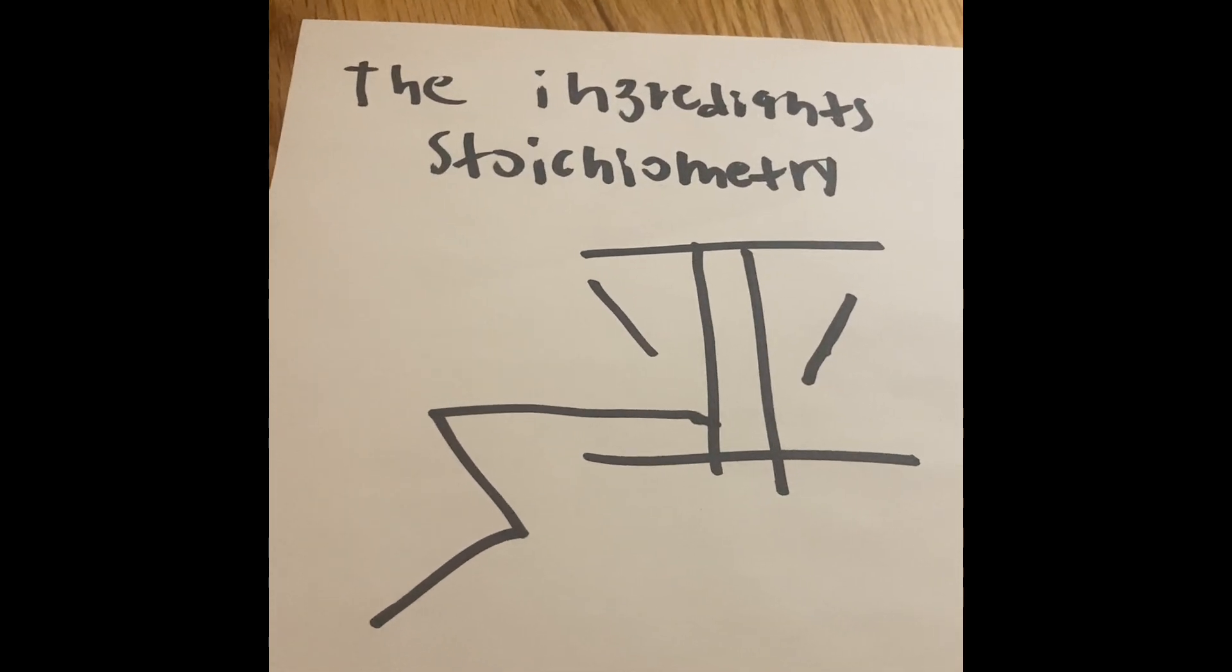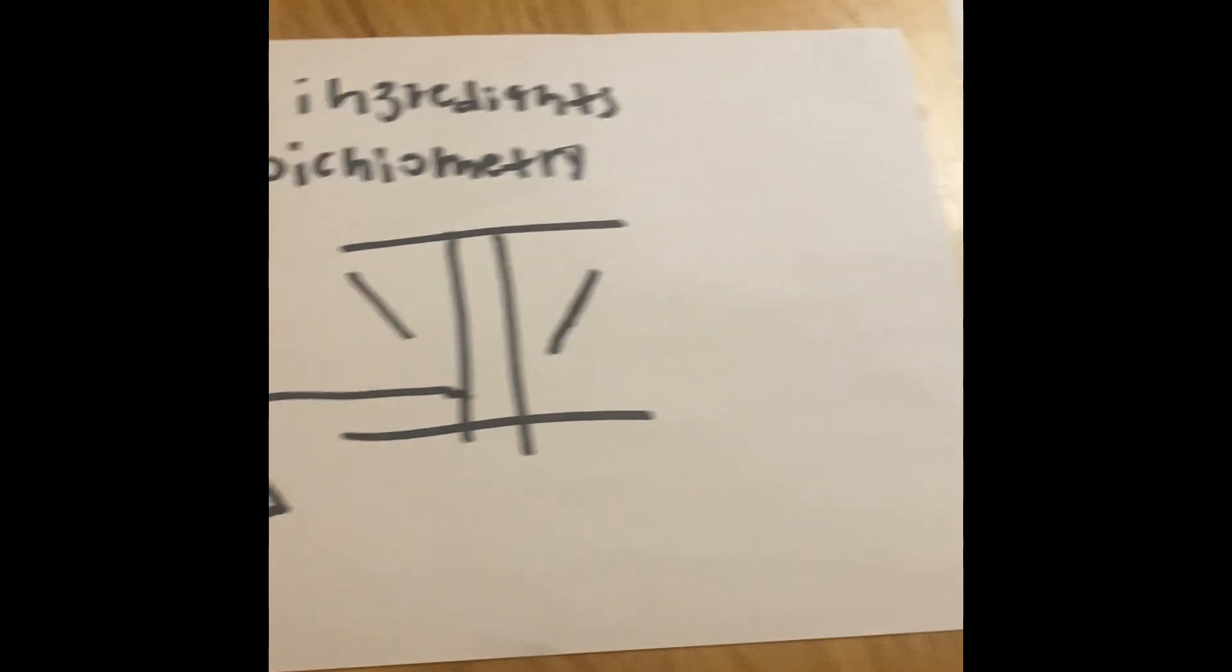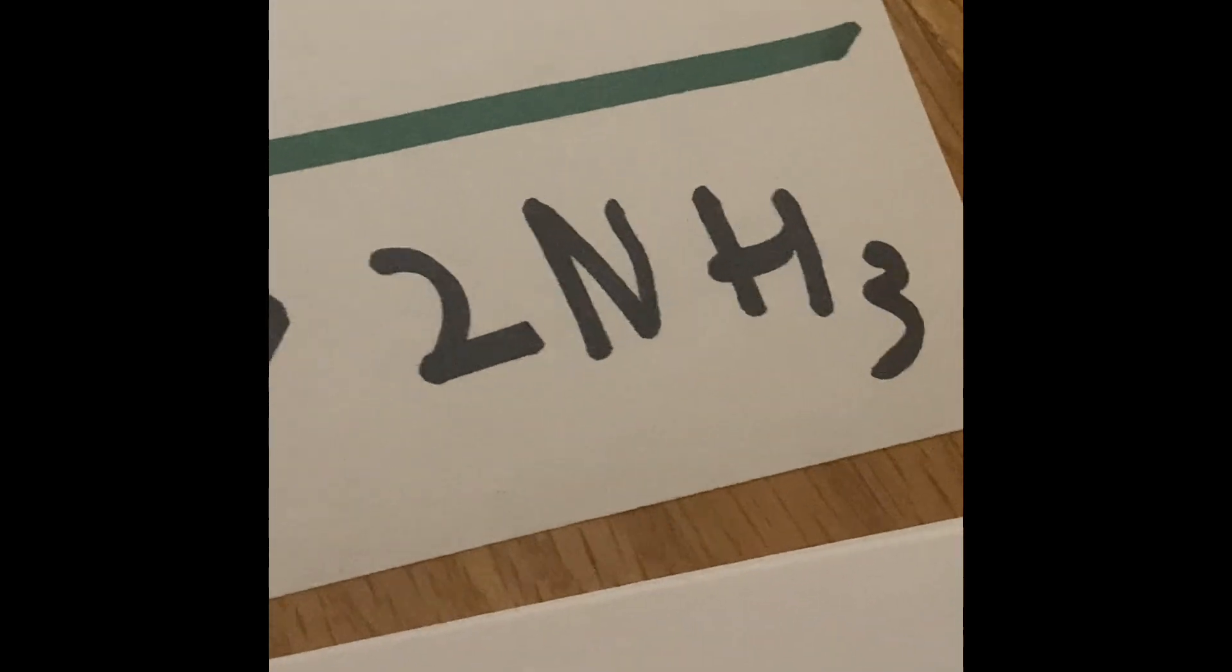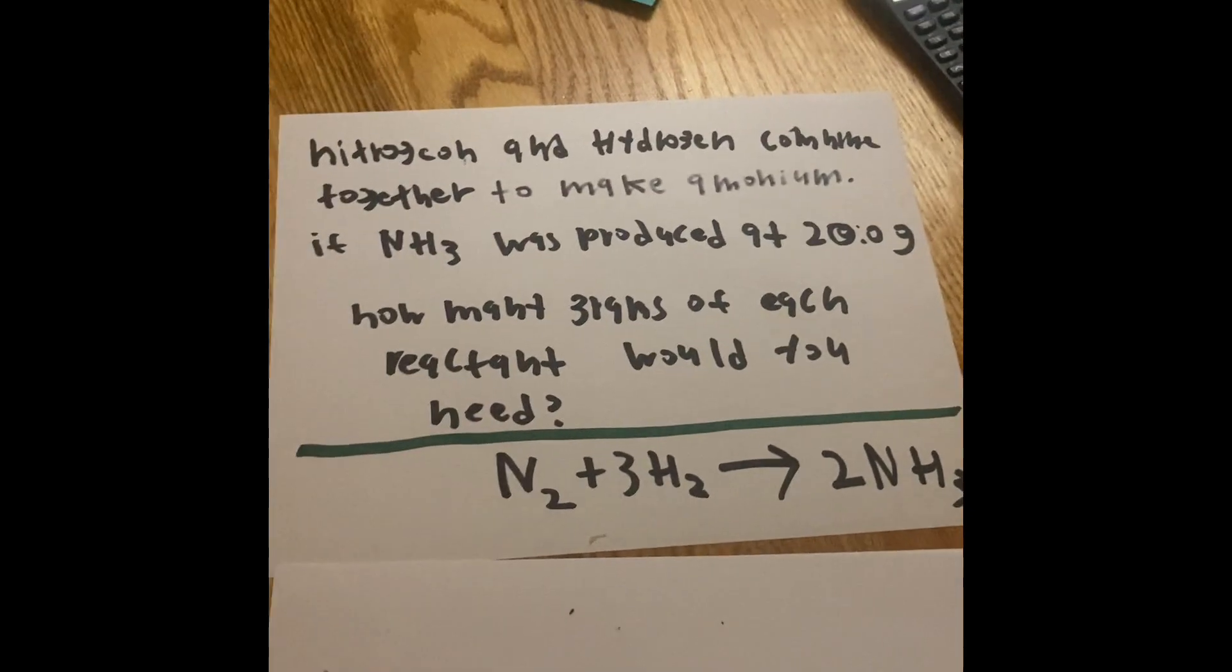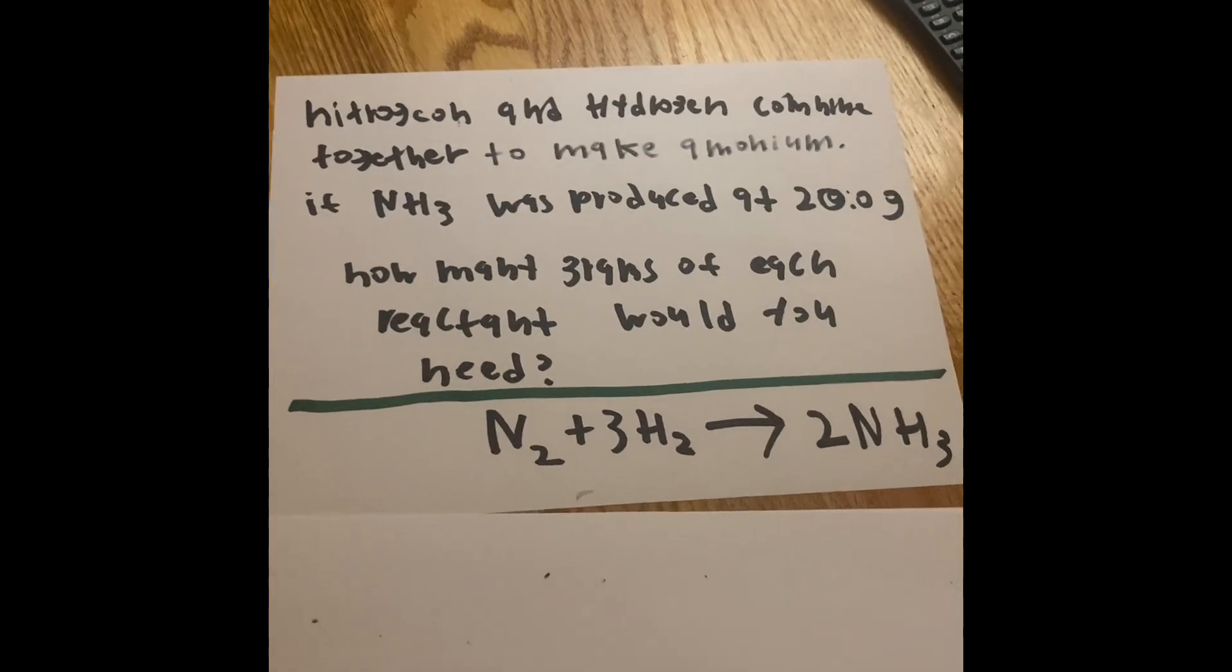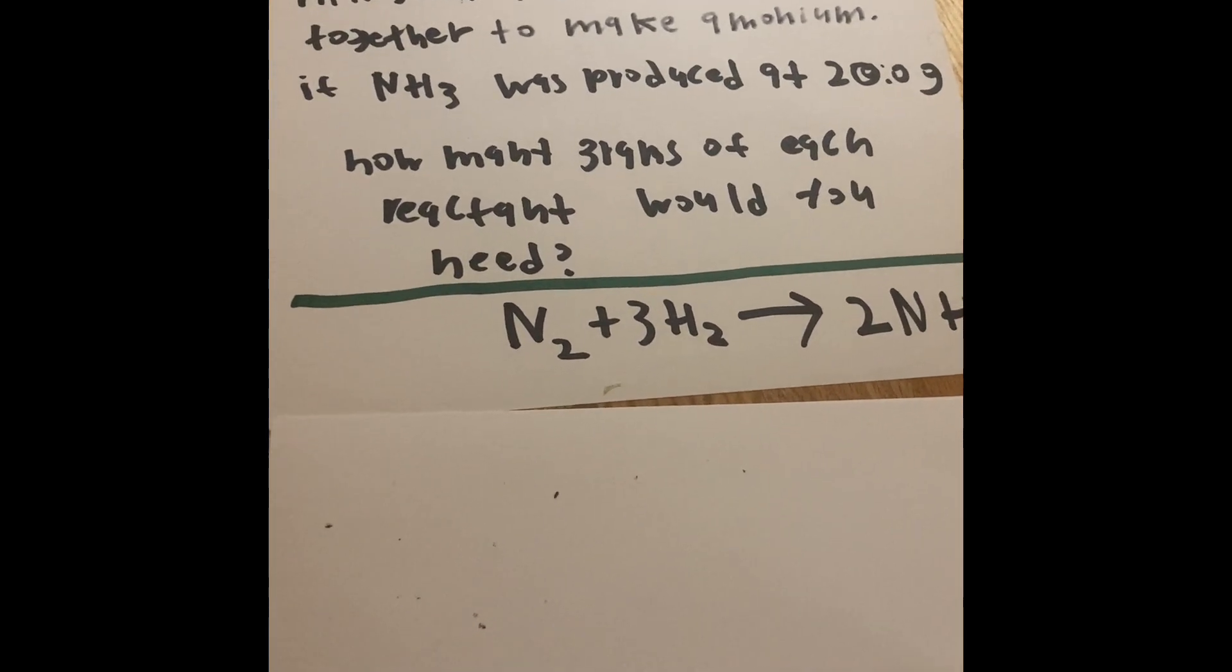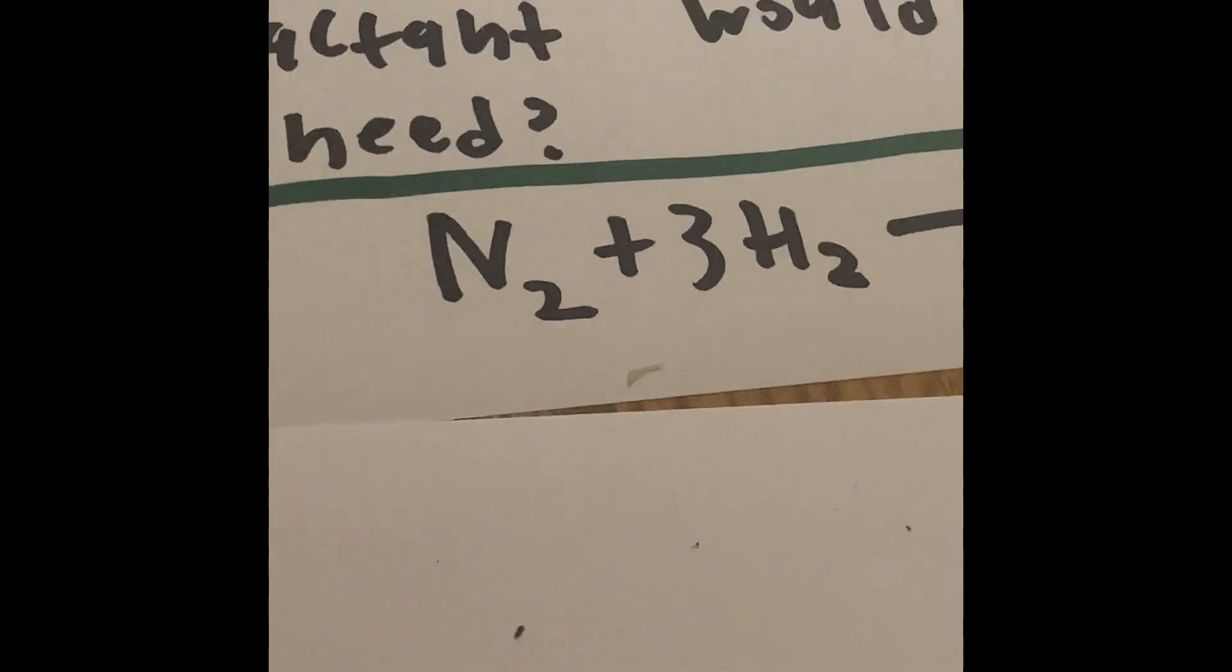And the thing about that is, we've been trying to look at the mass and the grams of the product when we have a balanced equation. But there is one little question: what happens if we try to find the mass and also the amount of moles in the reactants, the ingredients?